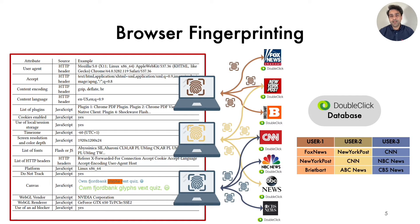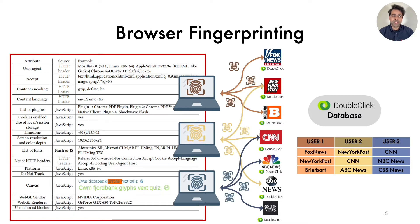The key idea in browser fingerprinting is to create a unique tracking identifier at runtime by combining the values exposed by JavaScript APIs and HTTP headers. Trackers combine information such as screen size, languages, plugins, and fonts installed in the browser to create a fingerprint that is unique to the user. Since the fingerprint is dependent on the user's machine hardware and software configurations, it cannot be easily removed as compared to cookies, which makes browser fingerprinting far more intrusive and harder to mitigate.